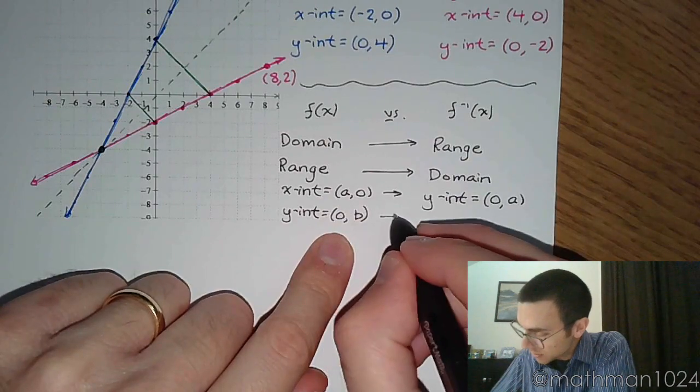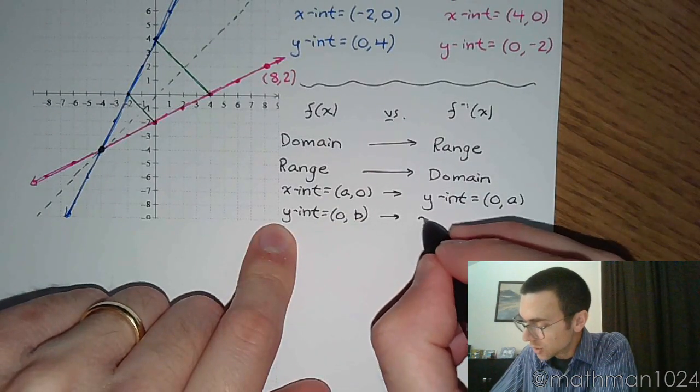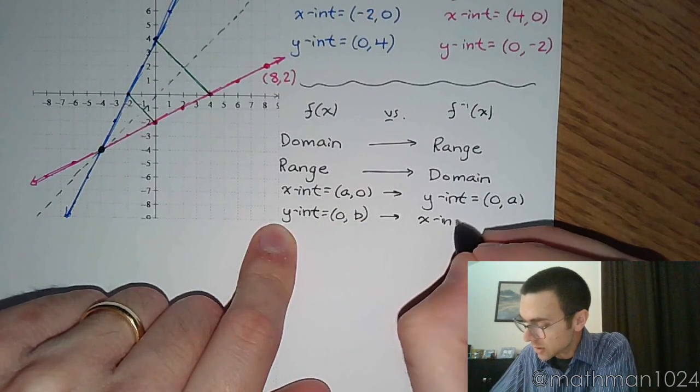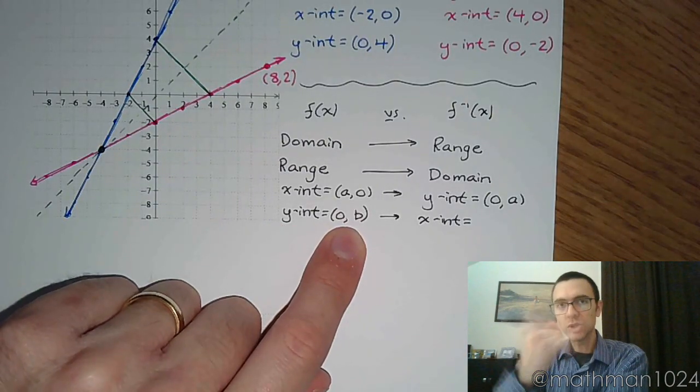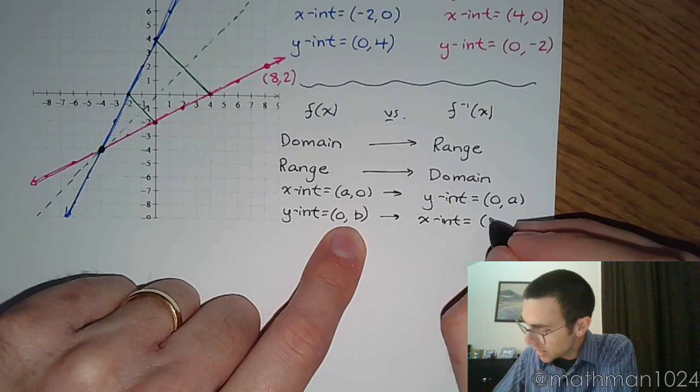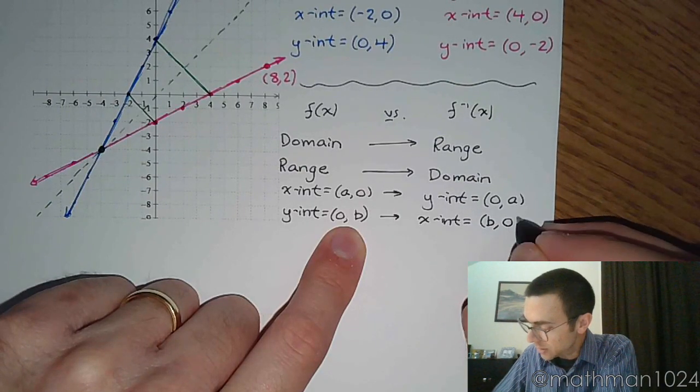The y-intercept, so the y-intercept is going to mean that you have an x-intercept. If you have the ordered pair not 0, b, again swap the coordinates, and you would have b, 0.